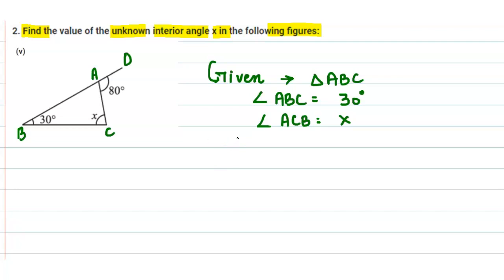Also we are given the exterior angle of this triangle, angle DAC, which is 80 degrees. And we have to find the unknown interior angle x.